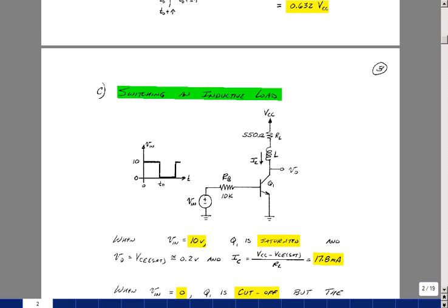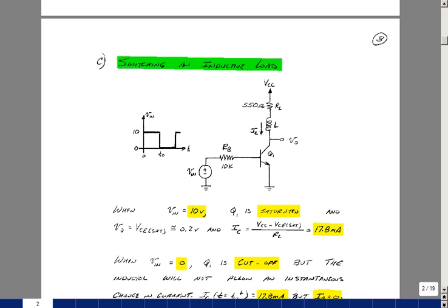Besides switching a capacitive load, we could also switch an inductive load. Let's put an inductor in series with the collector resistor. This is going to be a reed relay when we go to lab, and the resistance of the relay is around 550 ohms.